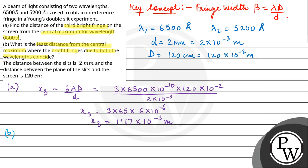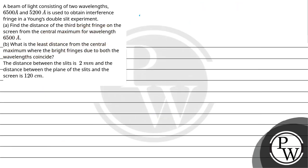...coincides with the mth fringe for lambda 2. So n by m would be lambda 2 upon lambda 1, that is 4 by 5.